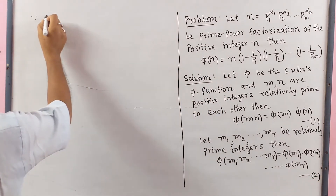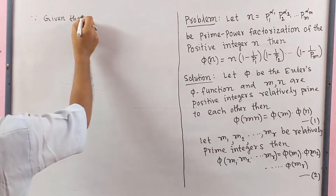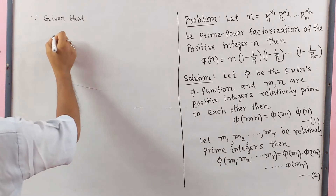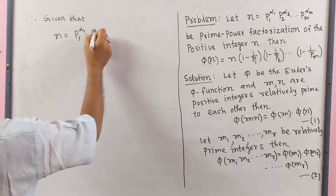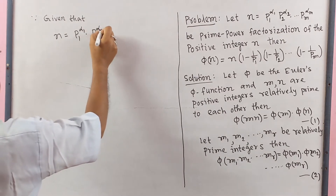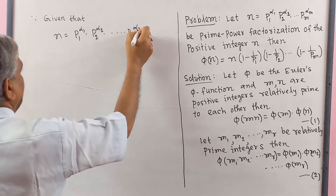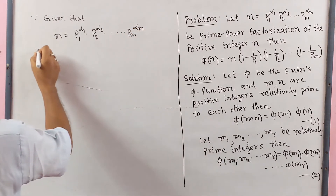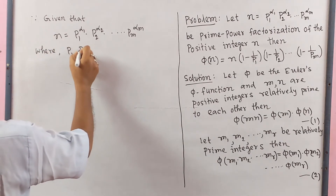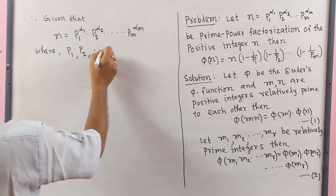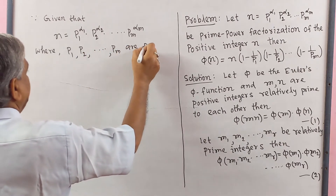Since given that n equal to P1 to the power alpha1, multiply P2 to the power alpha2, multiply dot dot dot Pm to the power alpha m, where P1, P2, dot dot dot Pm are prime numbers.